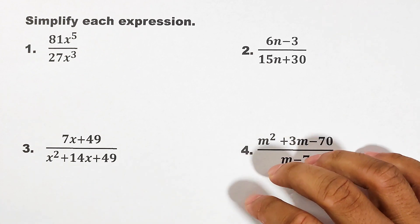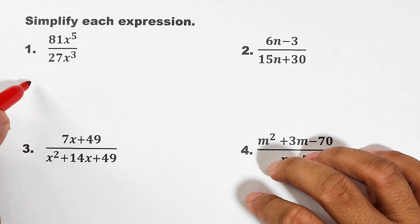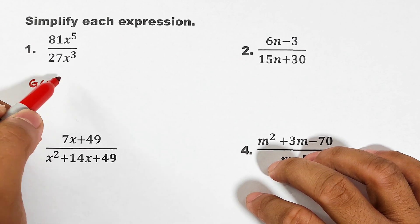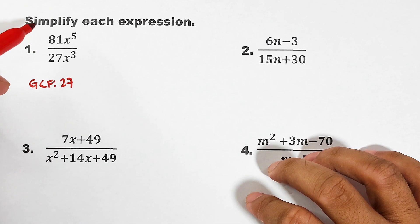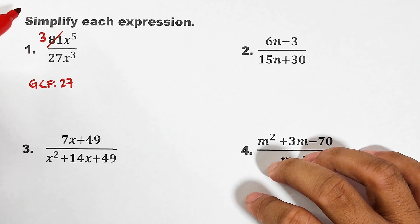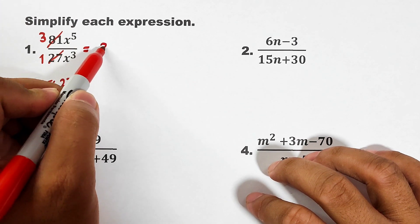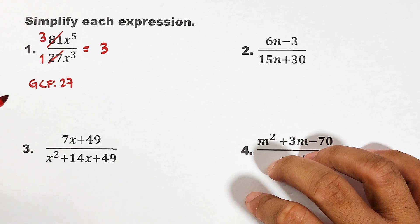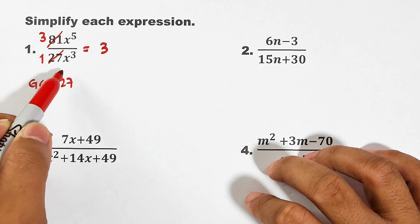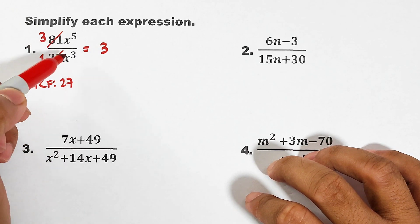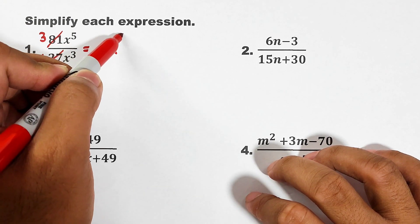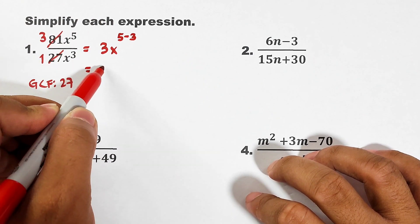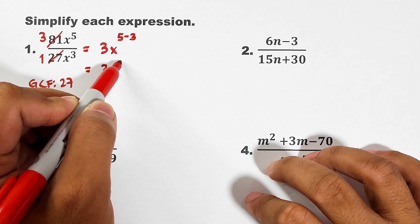For 81 and 27, you need to find their GCF. The GCF of 81 and 27 is 27. How many 27s do we have in 81? We have three, and we only have one 27 in 27, so the answer is three. For the variable, you have x raised to the fifth power over x raised to the third power — copy the variable and subtract exponents: five minus three gives x raised to the second power. The answer for number one is 3x².